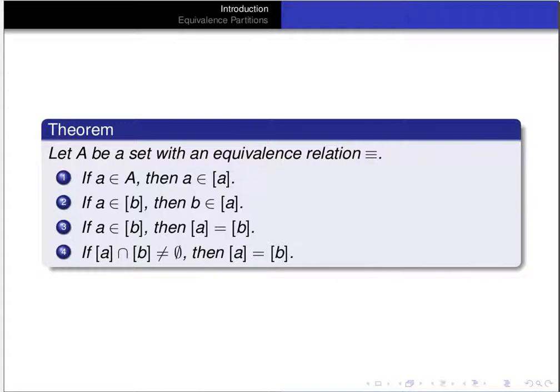Equivalence relations and their equivalence classes have some nice properties we proved previously: any element is a member of its own equivalence class; if a is in the equivalence class of b, then b is in the equivalence class of a; if a is in the equivalence class of b, then the two equivalence classes are equal; and if the intersection of the equivalence classes of a and b is non-empty, those classes are identical.